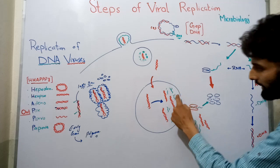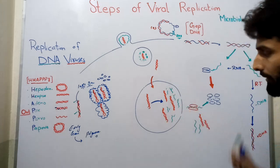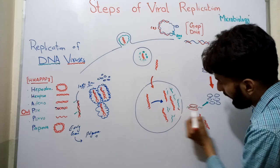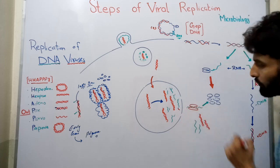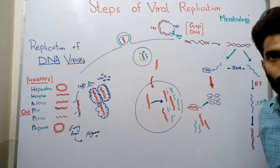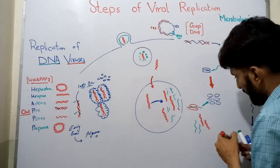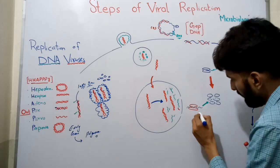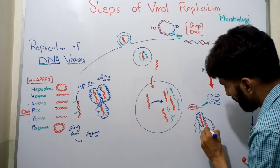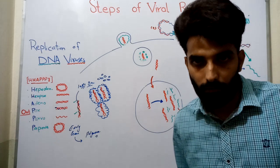Now this DNA and RNA will come out of the nucleus through the nuclear pore. These RNA molecules will attach with the ribosome and new structural proteins will be formed. These structural proteins will then assemble against the DNA copies and new viral copies will be formed.